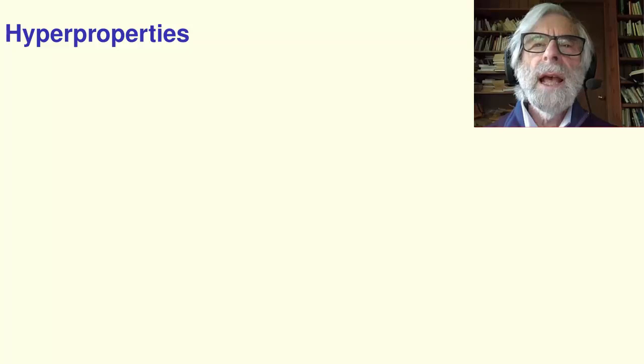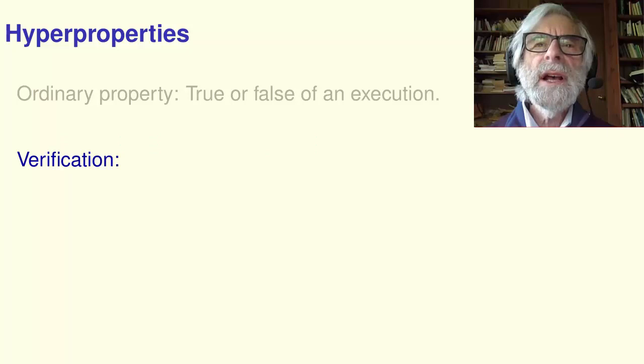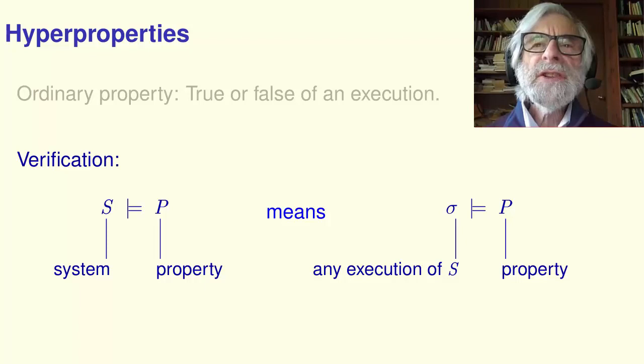What is a hyperproperty? An ordinary property is a predicate that's true or false of a single execution of a system. For example, the property that every request receives a response. Verifying that a system satisfies a property means showing that every execution of the system satisfies the property.